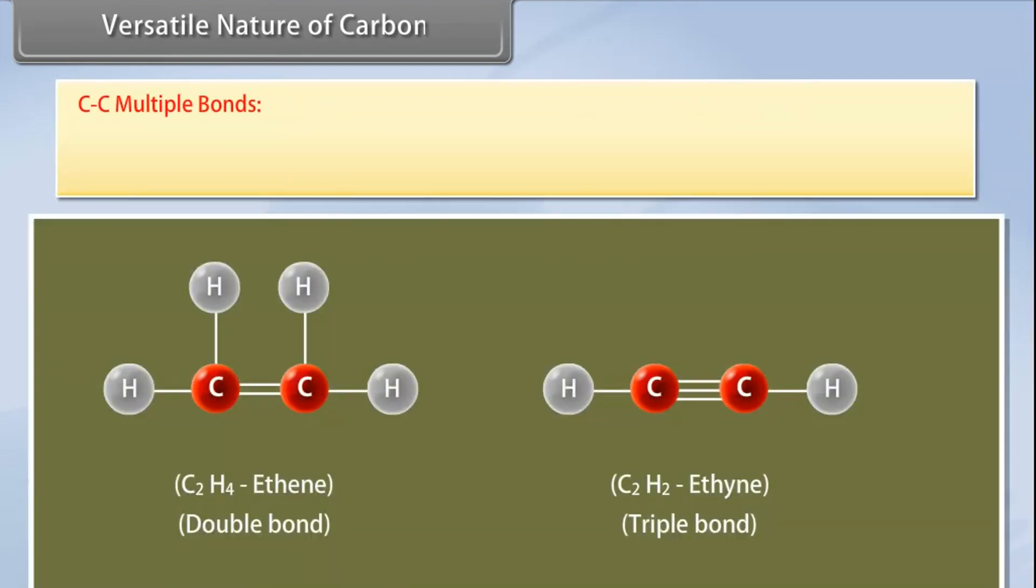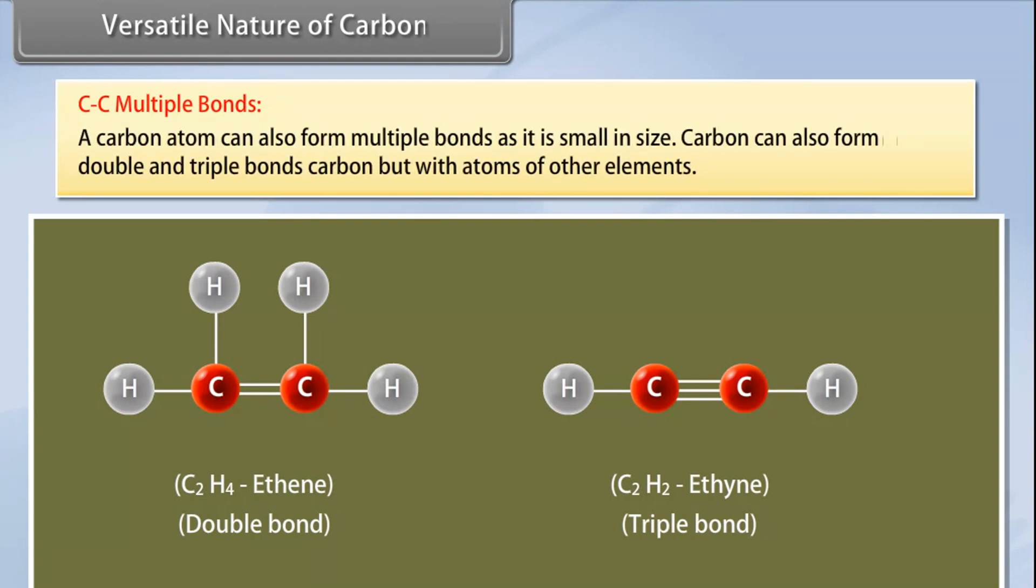Carbon-carbon multiple bonds: A carbon atom can also form multiple bonds as it is small in size. Double and triple bonds can also be formed with not only carbon but with atoms of other elements like oxygen, nitrogen, and so on. These multiple bonds provide variety in carbon compounds.